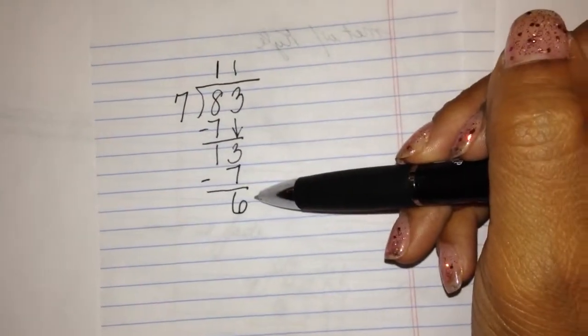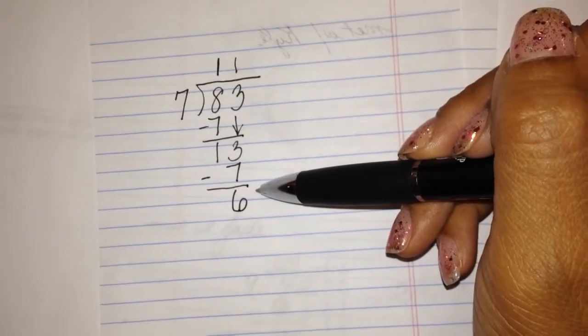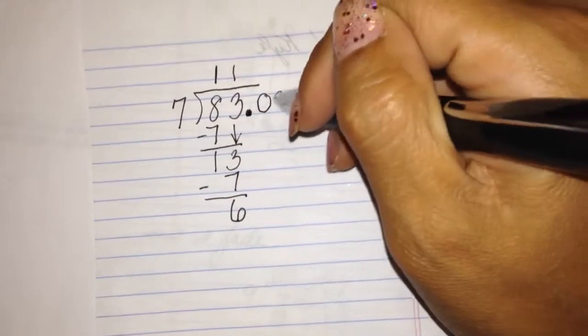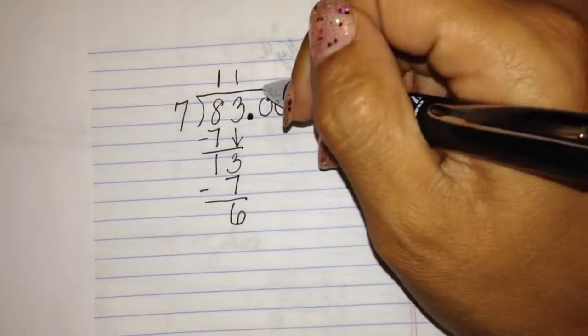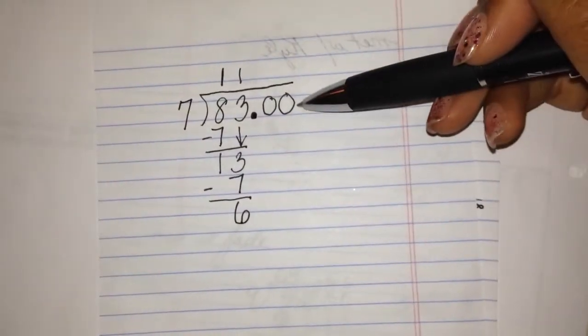Now normally I would just write remainder 6. But now that we're in 6th grade, we're going to learn to divide further. So the first thing I'm going to do is I'm going to add a decimal here and two zeros. So now my number, my dividend, goes to the hundredths place.